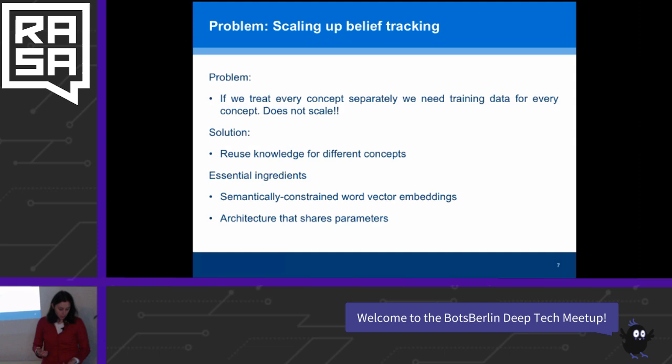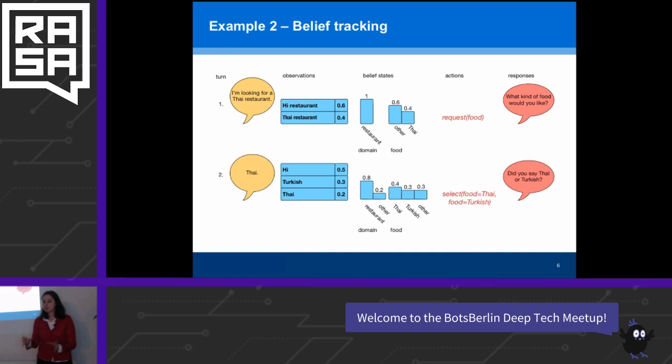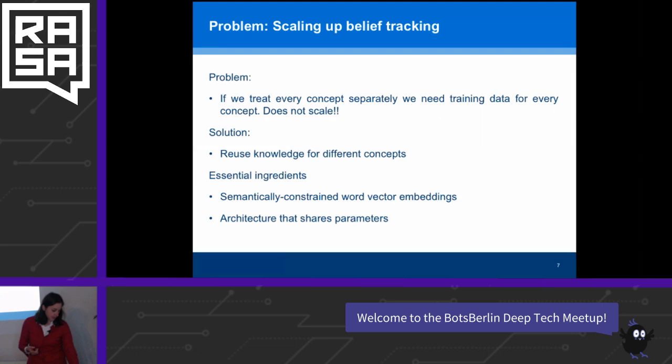That was a very simple example, but if you want to deploy deep learning to operate on large-scale systems that have a large number of belief states — I only mentioned restaurant and food-related concepts — if you want to build this tracker using deep learning methods, you need enough training data for every kind of concept in your ontology or database, and that simply does not scale.